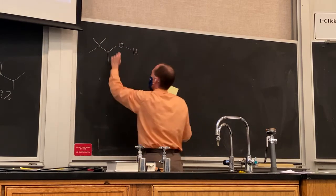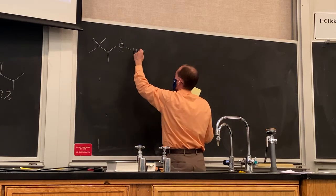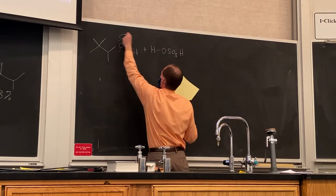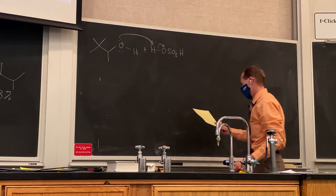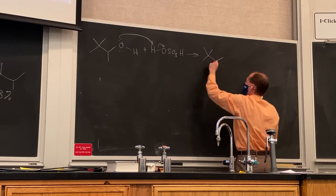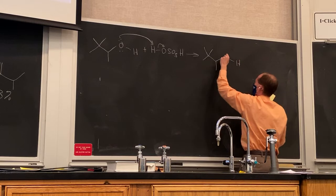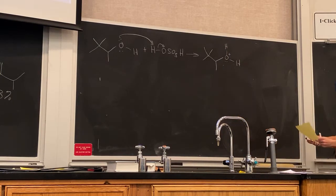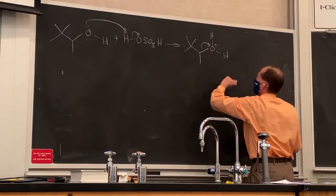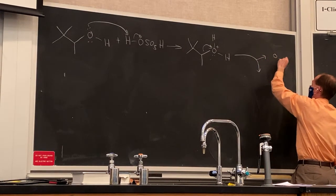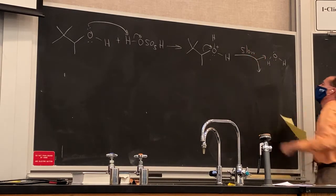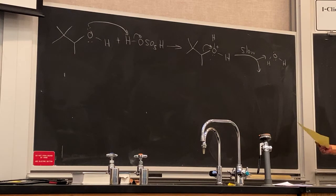The first step is going to be the same as any other dehydration. We're going to protonate the oxygen using our sulfuric acid. That gives us our oxonium ion. Then our second step is going to be loss of water. We know that's going to be a slow step because we're forming a carbocation in this process.